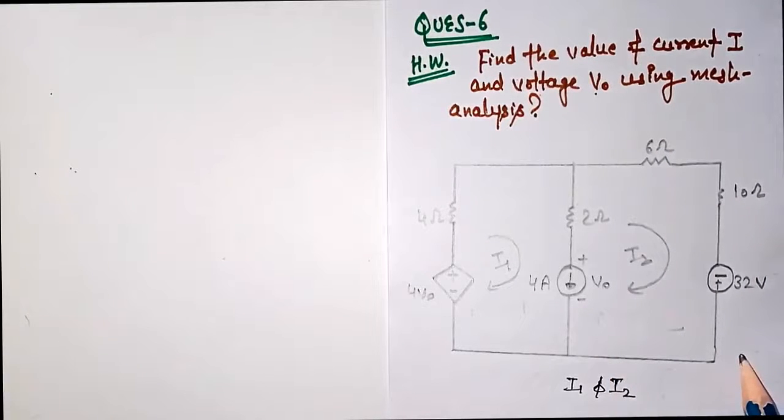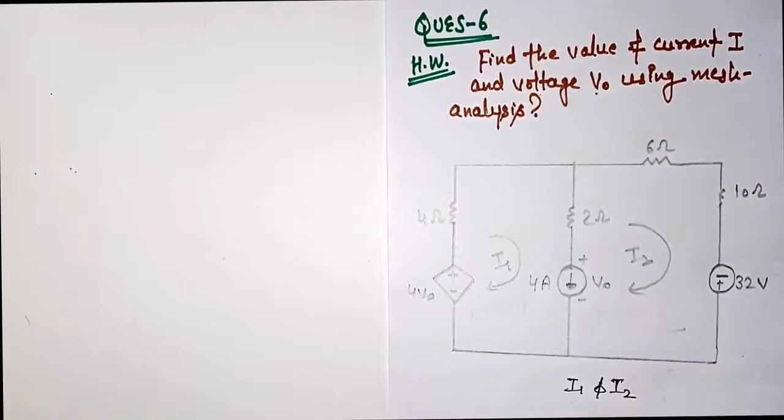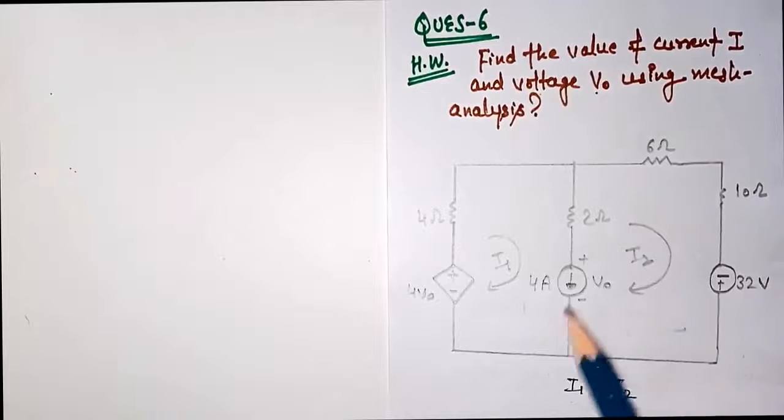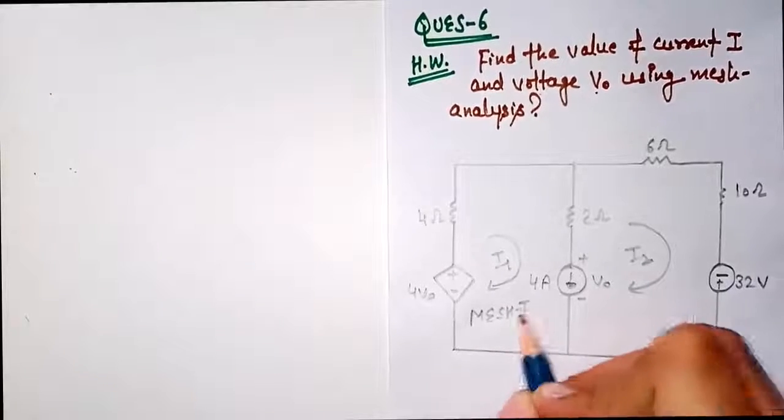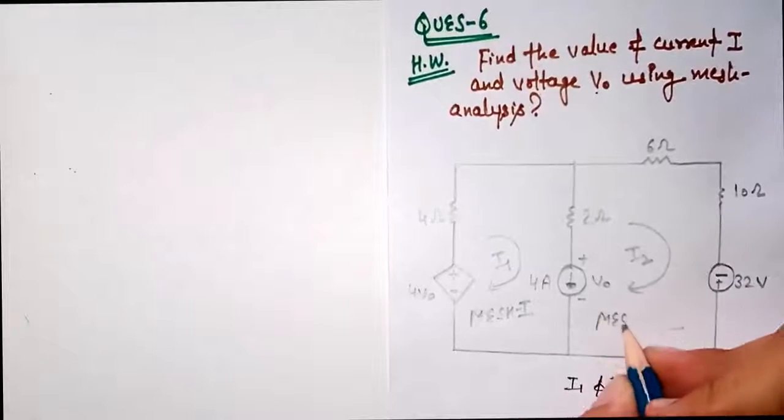Find current I, means I1 and I2. You can find both and then add. Let me give you something: take this loop as mesh one and this as mesh two.